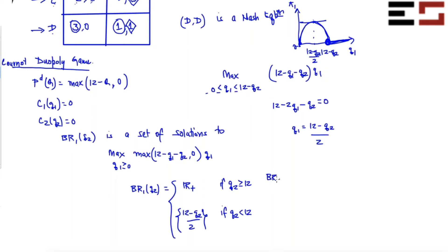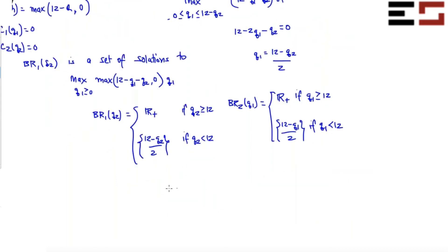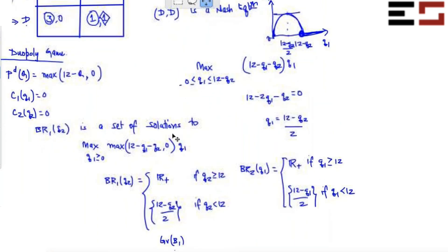Similarly, you can write BR2(Q1): it's the entire non-negative real line if Q1 is greater than or equal to 12, and because of symmetry you don't have to solve again — just change the indices and write the best response function for player 2. Now to find the Nash equilibrium, you have to plot the graphs of BR1 and BR2 and figure out their intersection.